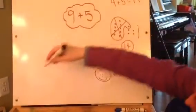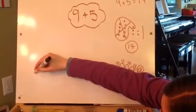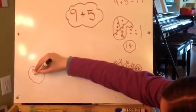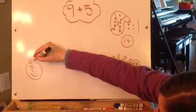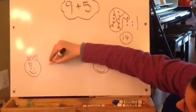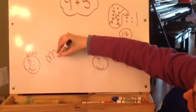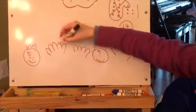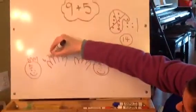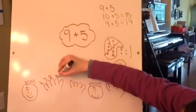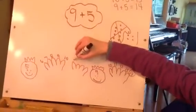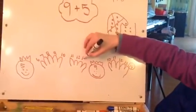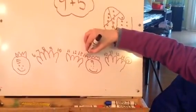Or I could put the 5 in my head. And I could count on 9 more fingers. And then this would be 6, 7, 8, 9, 10, 11, 12, 13, 14.